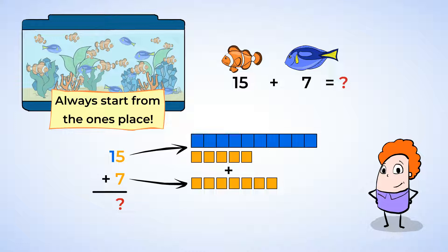Great! Now we can add all these base 10 blocks to find out how many fish are in the tank. When we add, we always start with the ones place and move to the left, which is called the tens place.